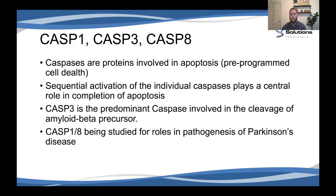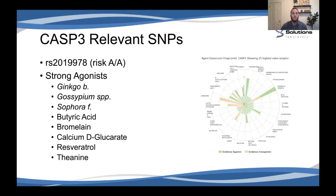Caspase 3 is the predominant caspase involved in cleavage of amyloid beta precursor proteins, and caspase 1 and 8 are being studied for their roles in the pathogenesis of Parkinson's disease. Some relevant SNPs are listed with RS numbers and risk alleles — the risk allele for caspase 3 would be A. All these SNPs are included in the Genomic Insight Opus 23 Explorer dashboard, so you can check every one of these for clients you've run this test on.